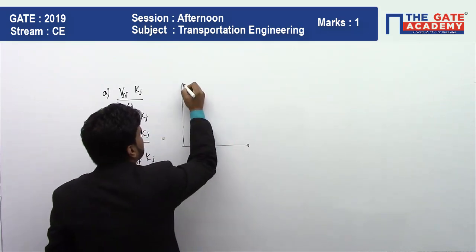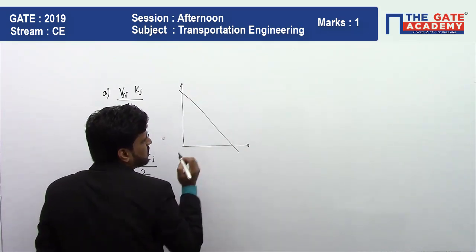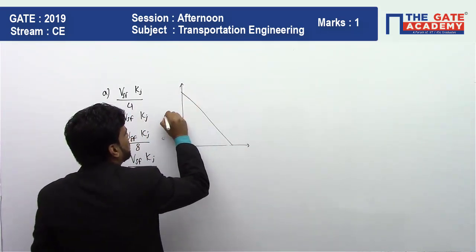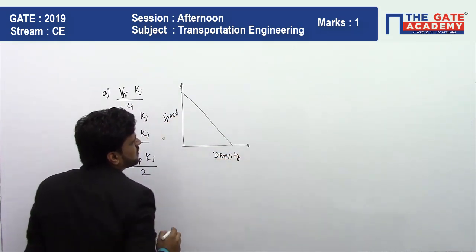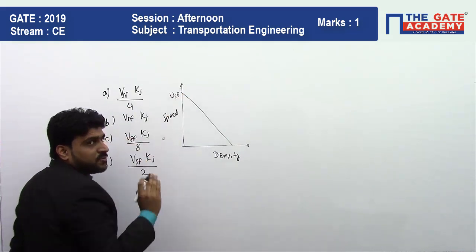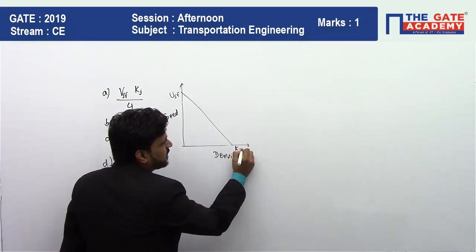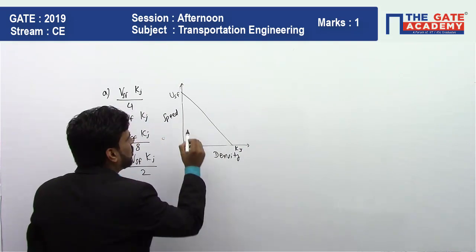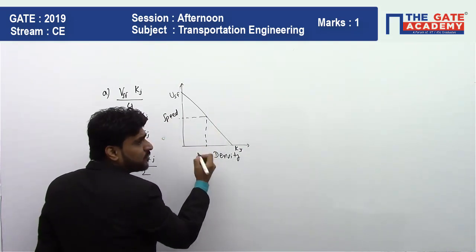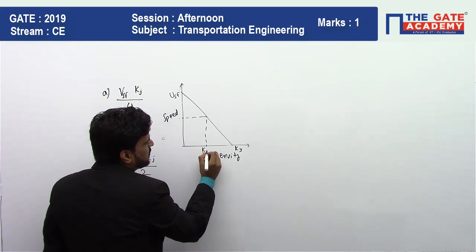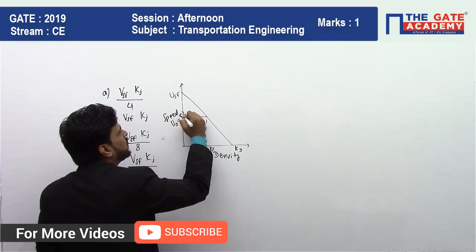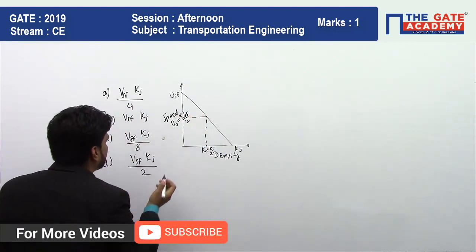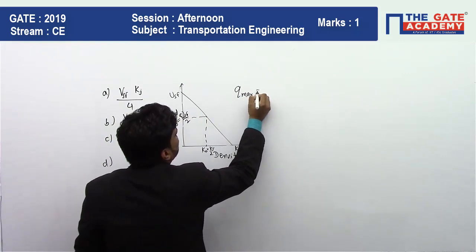For the speed-density relationship, we know this is a linear relationship between speed and density. Here on the graph, the y-axis is speed (u) and the x-axis is density. The free flow speed is Usf and jam density is kg. In between, there is an optimum speed and optimum density where you get maximum flow (q_max). The optimum density is kg/2 and the optimum speed is Usf/2.